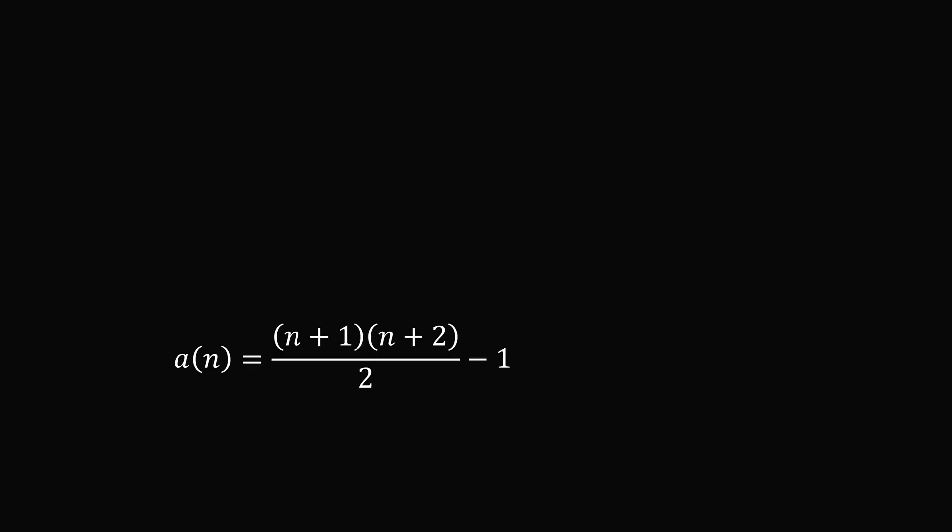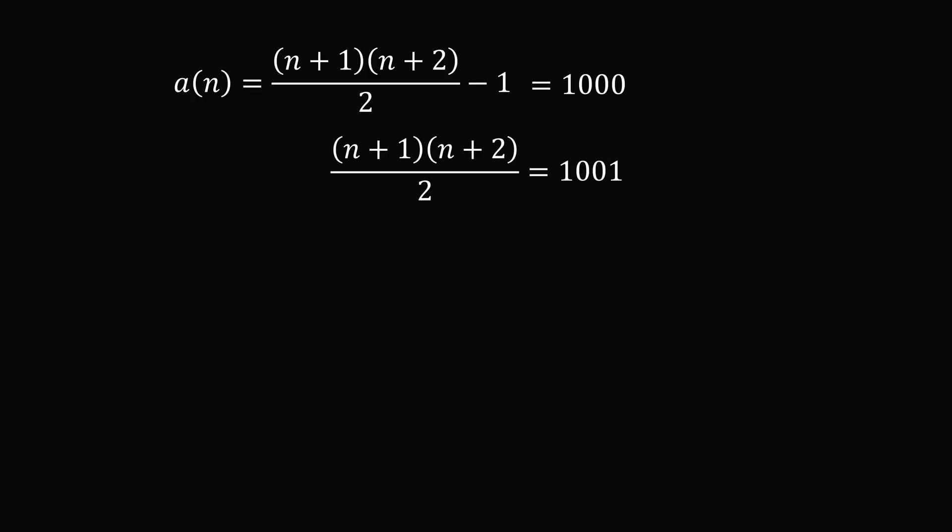Now this is the position of the 7s in the decimal expansion. So we just need to figure out if this equals 1000 for an integer value of n. So we set this equation: (n+1)(n+2)/2 = 1001. We multiply both sides by 2, so now we have (n+1)(n+2) = 2002.